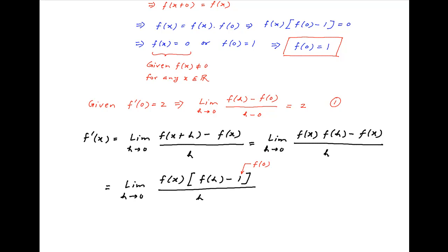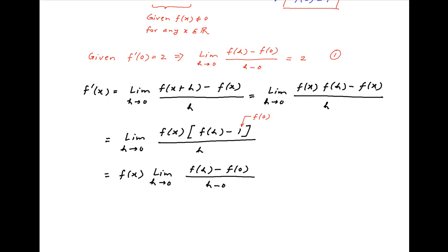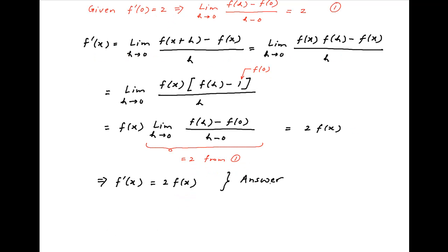Recalling that f(0) = 1, we can rewrite f(h) − 1 as f(h) − f(0), so the expression becomes f(x) times the limit as h→0 of [f(h) − f(0)] / h. The value of this limit equals 2 by equation 1, and therefore f'(x) simplifies to 2·f(x), which is the required result.